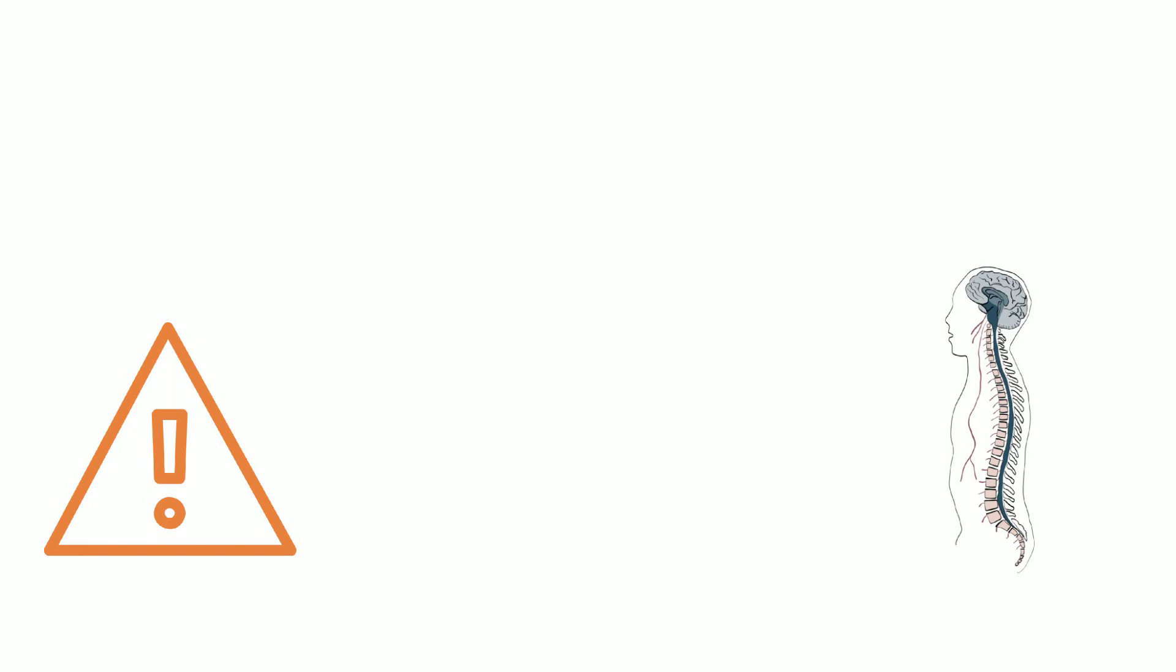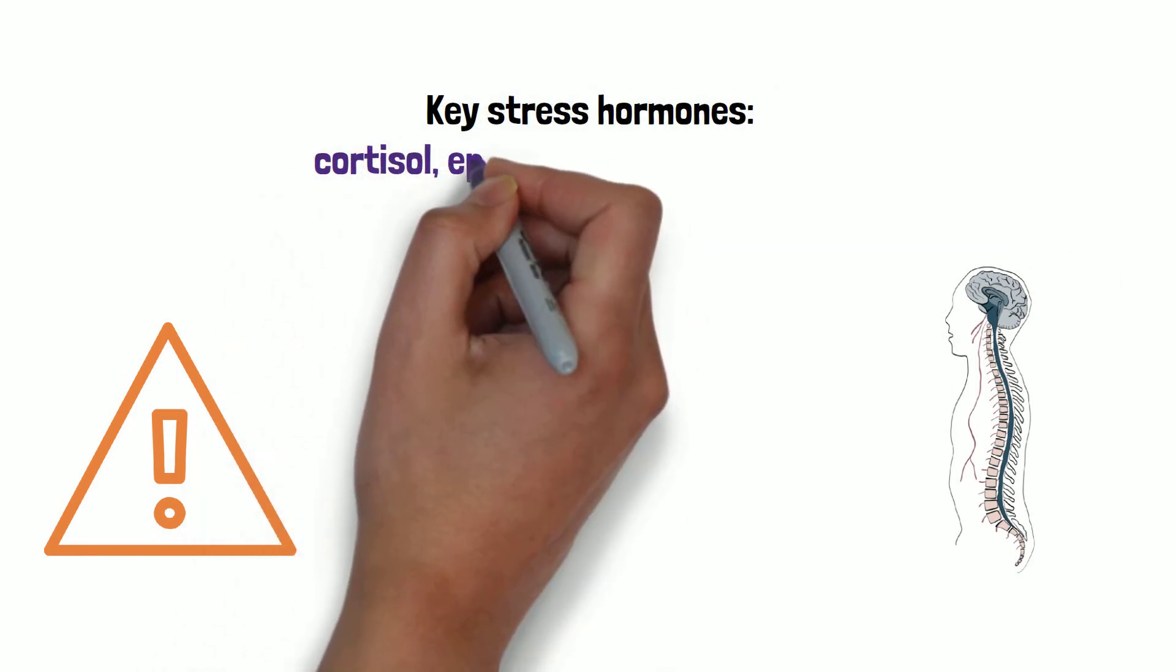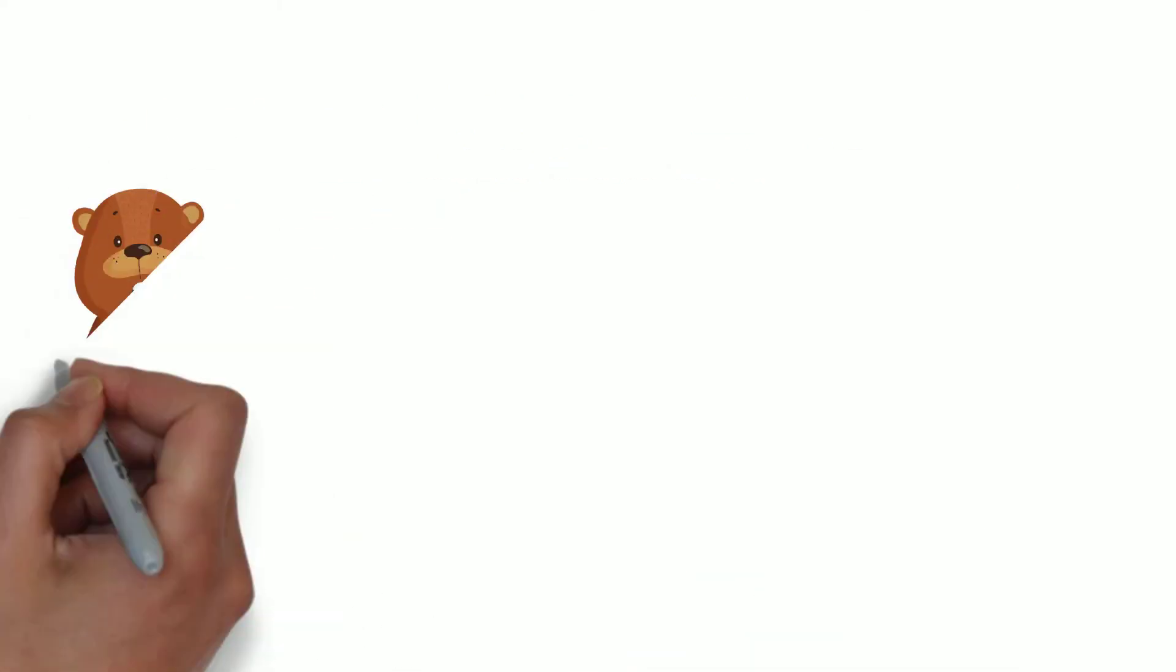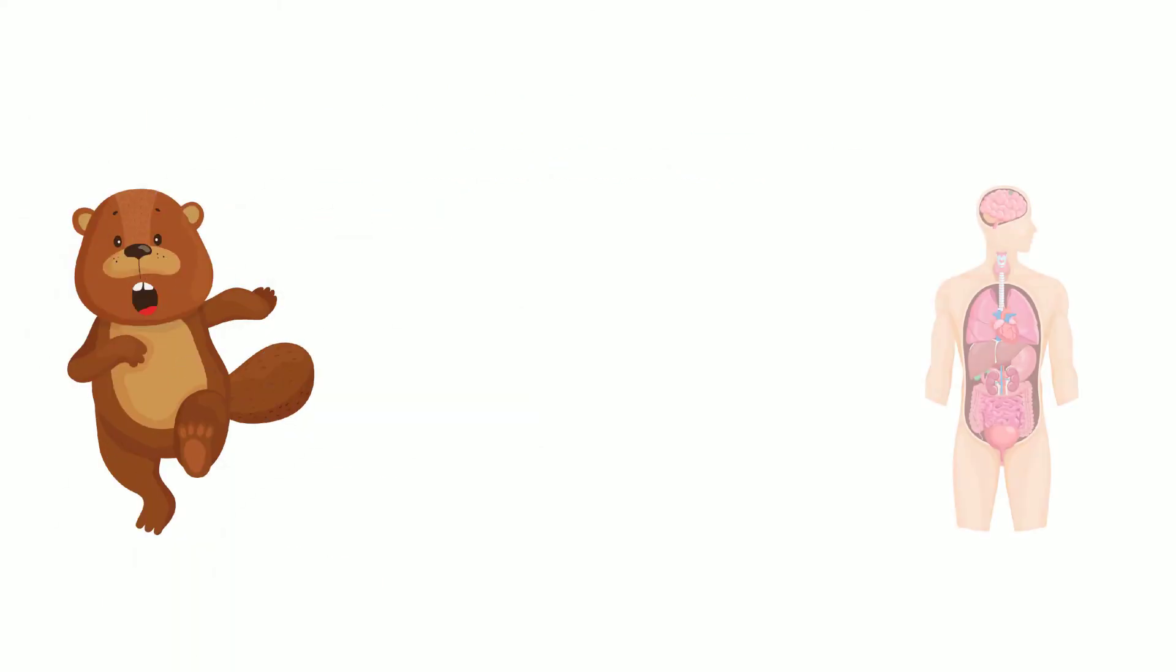Whenever your body perceives a threat, the sympathetic nervous system is stimulated and key stress hormones such as cortisol, epinephrine, and norepinephrine are released. These hormones are intended to promote physical movement and activate many of our organ systems to help us escape from perceived danger.